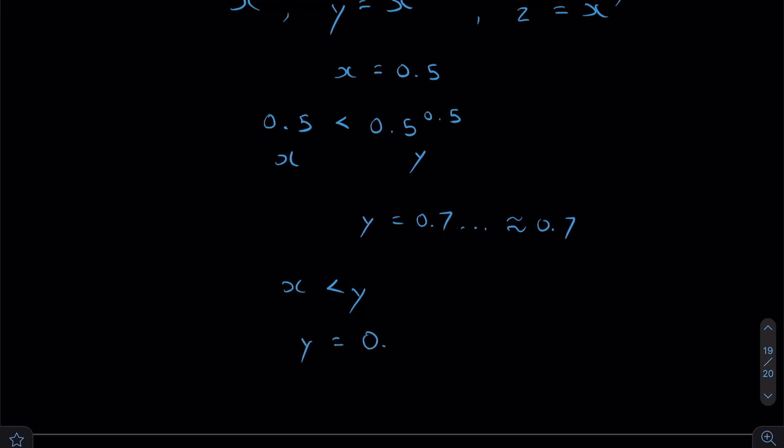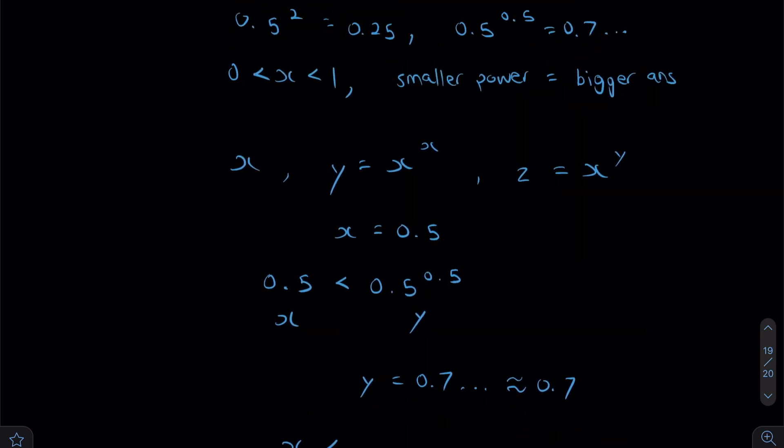Y is going to be equal to 0.5 to the power of 0.5 while z is going to be 0.5 to the power of, let's just say, 0.7.